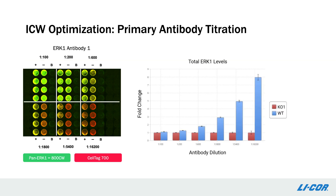The next optimization step I'd like to show is optimization of antibody dilution. By titrating the dilution of primary antibody used, we can identify the dilution that provides the highest specific signal with the lowest nonspecific background signal. Here, various dilutions of ERK-1 antibody were added to wild-type HeLa and ERK-1 knockout HeLa cells. When we look at the change in ERK-1 levels, you can see that the greatest difference in signal between wild-type and ERK-1 knockout HeLa cells is at the lowest dilution.